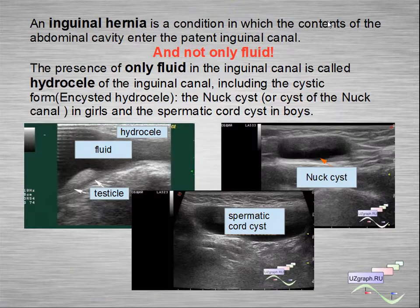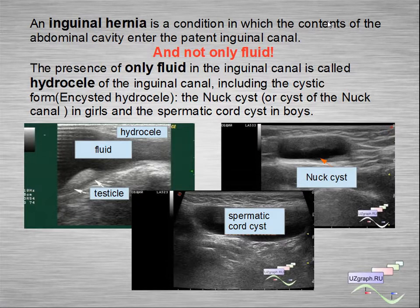Inguinal hernia is the condition in which the contents of the abdominal cavity enter the patent inguinal canal — and not only fluid. The presence of only fluid is called hydrocele, and this includes the cystic form, the Nuck cysts in females, and spermatic cord cysts in boys.